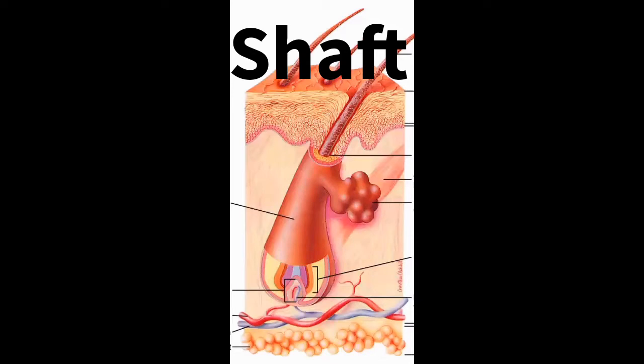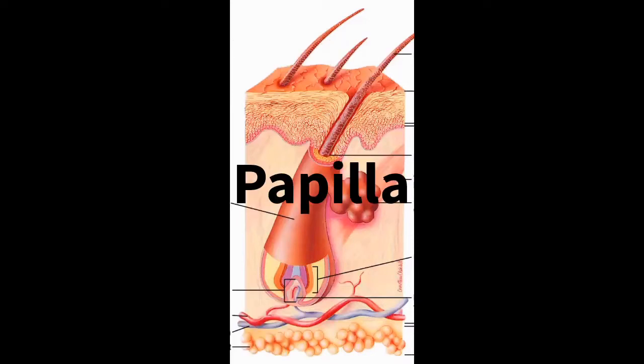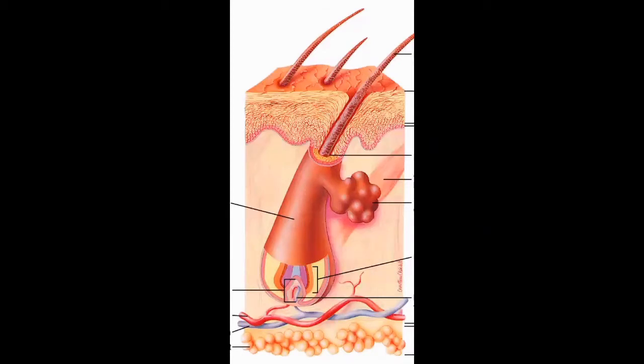Within the bulb there is this cone-shaped structure called the papilla, and if you watched the previous video, you know that the word papilla in Latin means nipple. It's kind of silly, but it kind of looks like a little nipple. Within the papilla there are a lot of blood vessels that will supply the developing hair with nutrients.